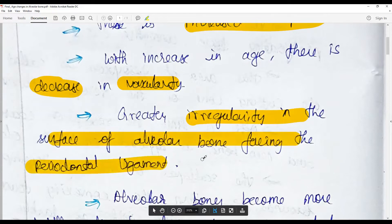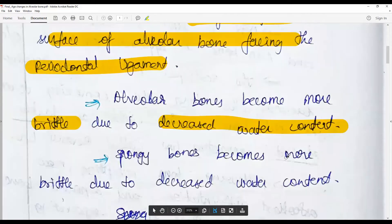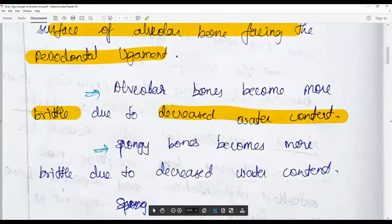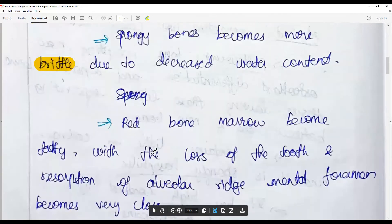The alveolar bone may become brittle by the decreased water content in the bone, and spongy bones may also become brittle due to the decreased water content. While the red bone marrow which is below the alveolar bone may turn fatty.